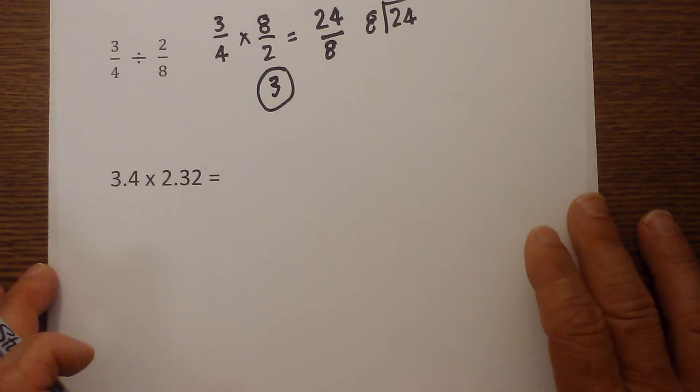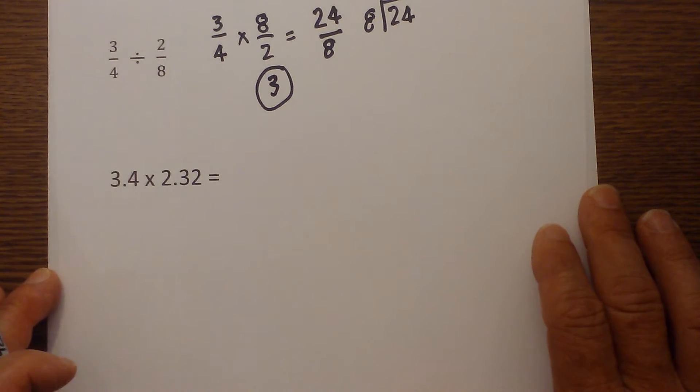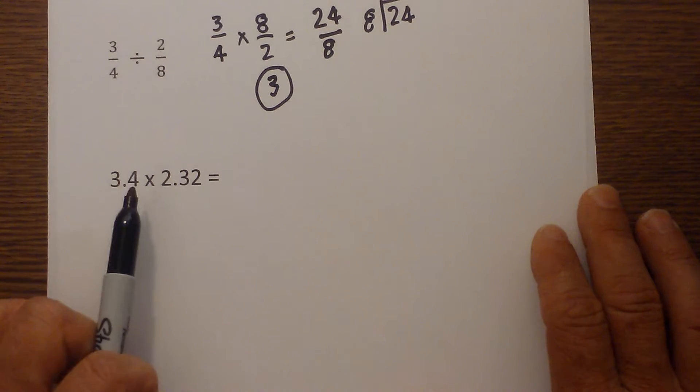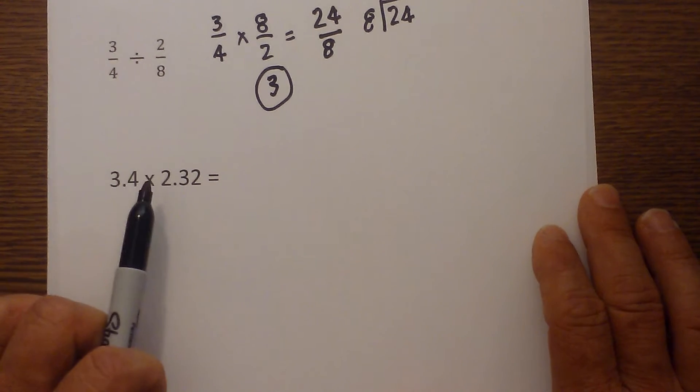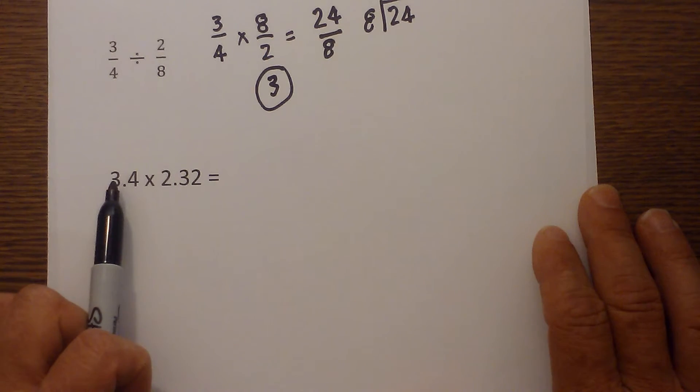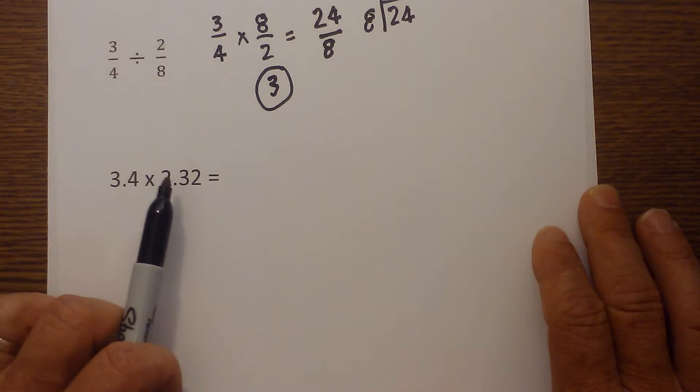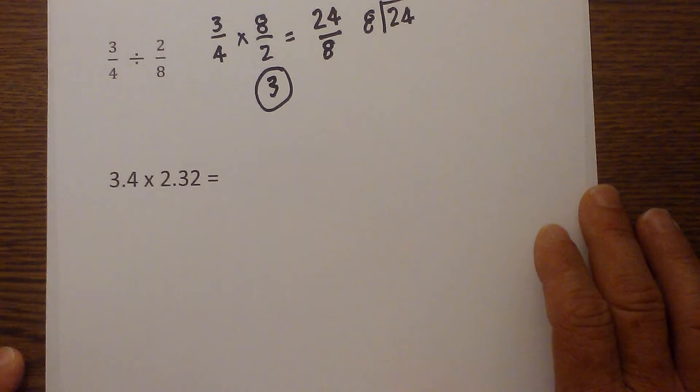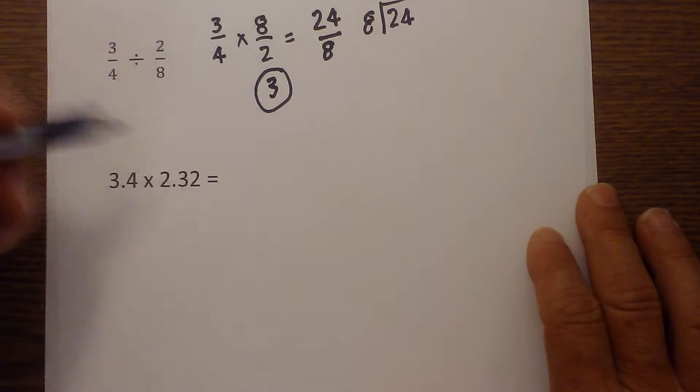Next we multiply decimals. And the shortcut or tip there is just first multiply and act as if there are no decimals. And then what you do is you count how many decimals are to the right. So we have 1, 2, 3, and your final answer needs to have the same number of decimals to the right.